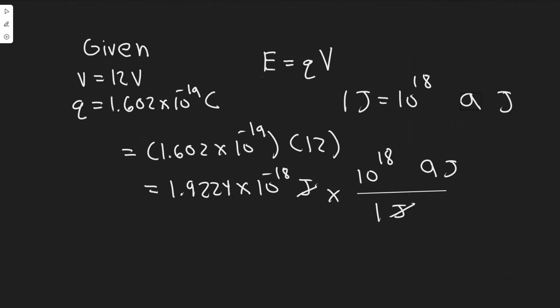So you're going to plug in your charge of the electron times the voltage, and you're going to get, in this case, 1.9224 times 10 to the minus 18 joules.